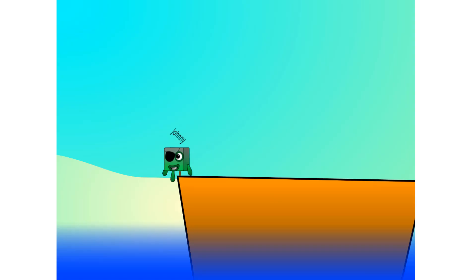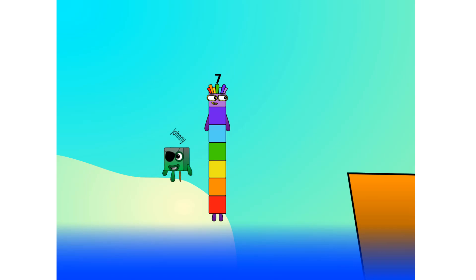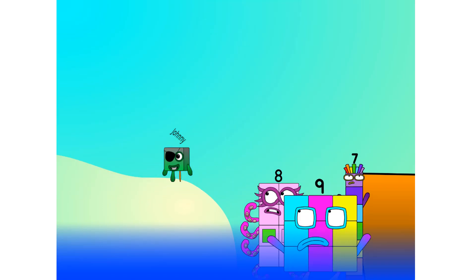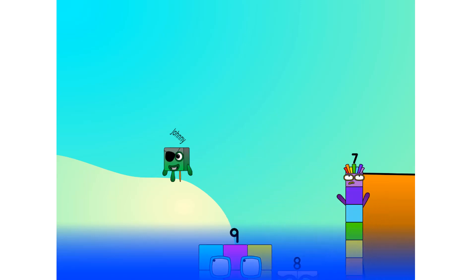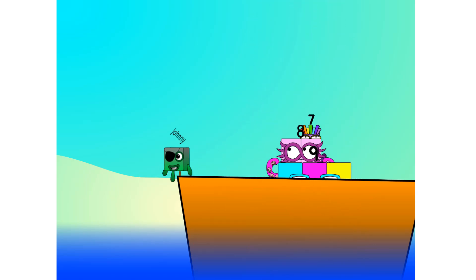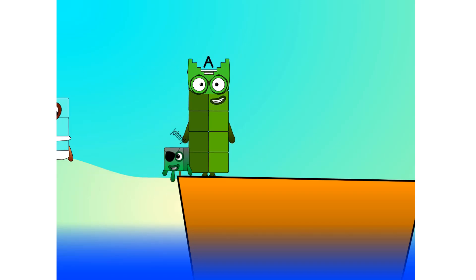All right, me hearties, into the boat you go. I have room for 20 numbers. Number 1, 2, move along lads. 3, 4, 5, 6, 7, step lively. 8, smartly now. Move along 9. Blow me down, numbers overboard! Hang on lads, it's a good thing you know how to swim.